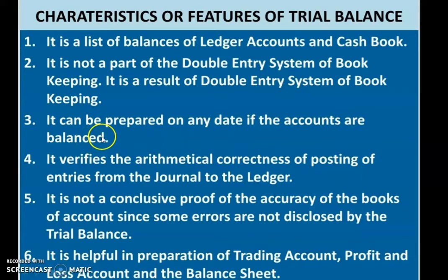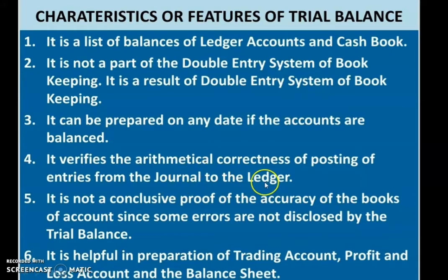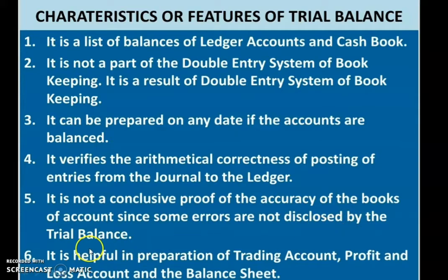Third, it can be prepared on any date if the accounts are balanced — if the ledger book is closed, then on any date you can prepare a trial balance. Fourth, it verifies the arithmetical correctness of posting entries from the journal to the ledger. Fifth, it is not a conclusive proof of the accuracy of the books of account, since some errors are not disclosed by the trial balance. We cannot completely depend on it for accuracy, as some types of errors trial balance cannot disclose.